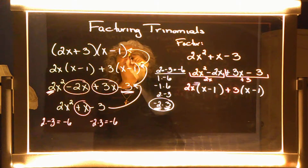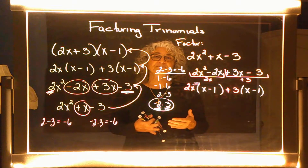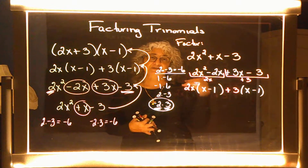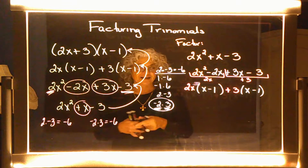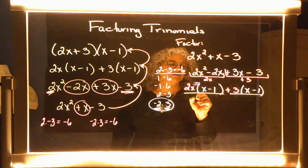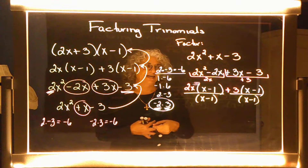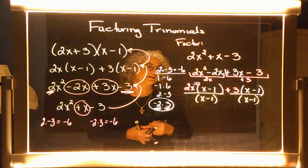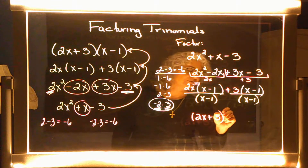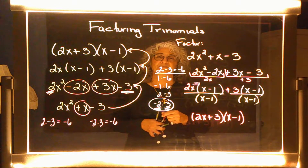I have these two terms and I'm noticing they have the parentheses in common. So I'm going to divide both of them by the parentheses. When I do that, what remains is 2x plus 3, and I multiply it by that parenthesis of x minus 1, because that's what it was distributed to.